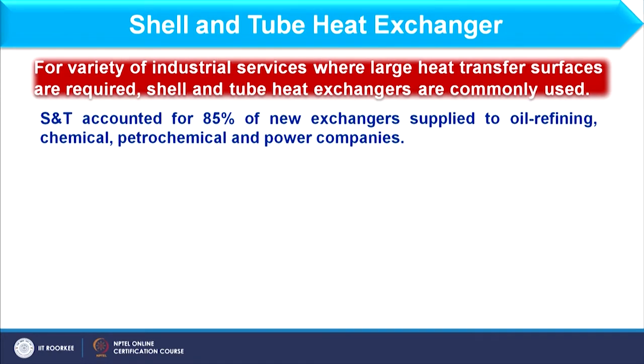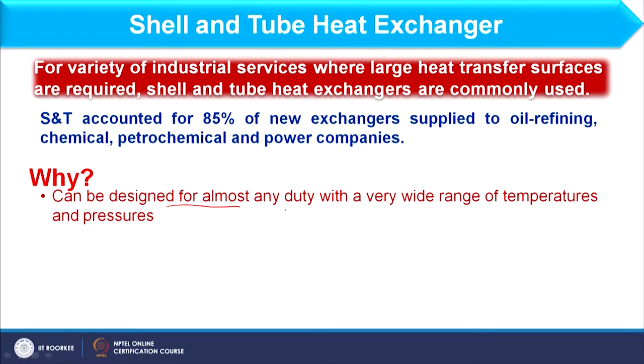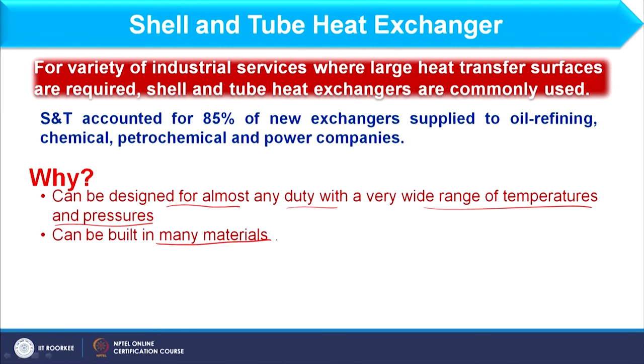There are several factors contributing to such wide usage. First, it can be designed for almost any duty with a wide range of temperatures and pressures. Next, it can be built in many materials — materials of construction used to make shell and tube heat exchangers are very large in number; different steels and other materials can be used. Another reason is it has many suppliers — if you search in India Mart you will receive many calls from suppliers.